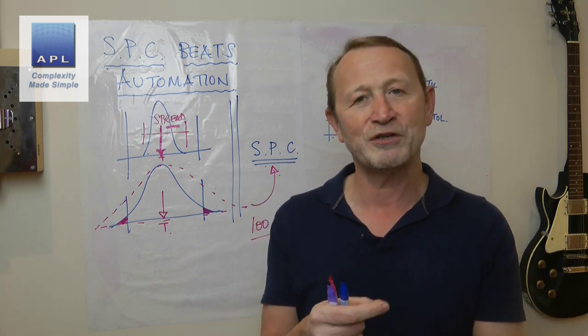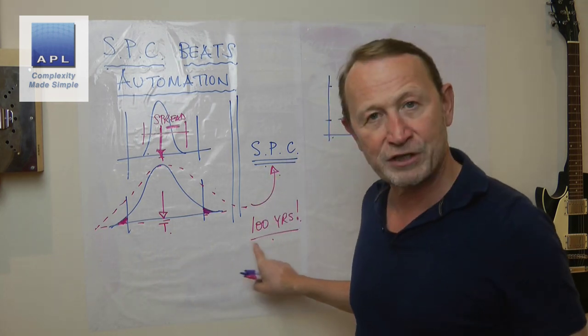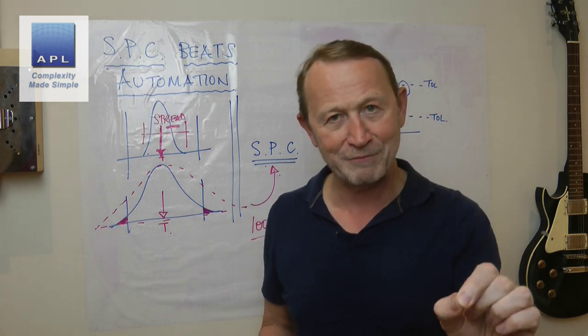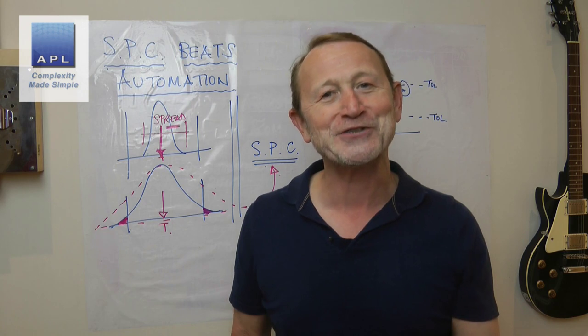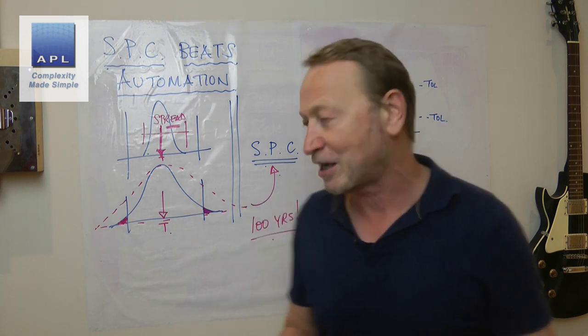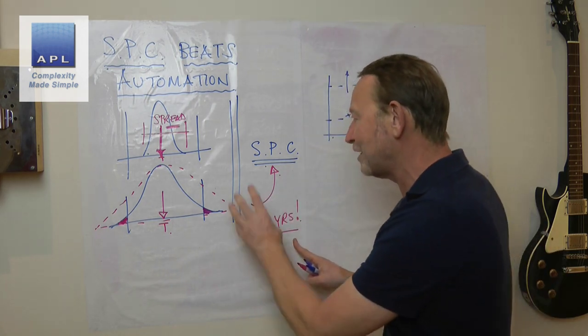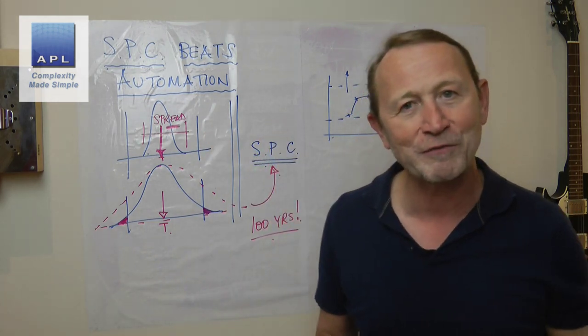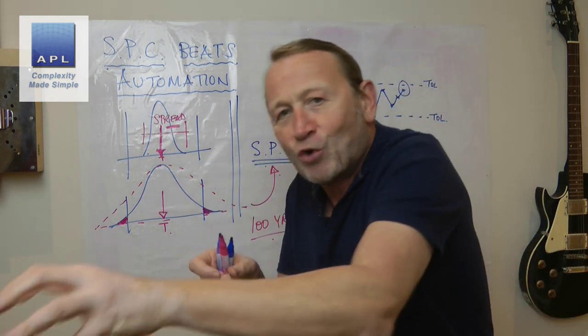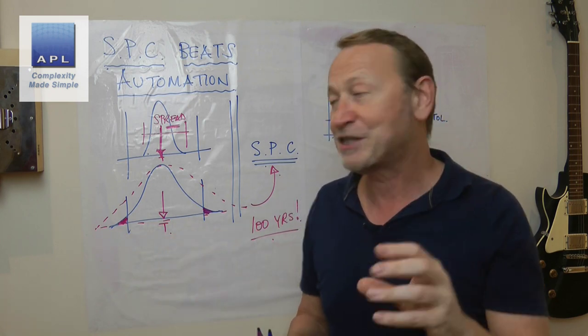But that's often because what we're doing is we're taking a hundred years of great mathematics and throwing it in the bin as if it doesn't exist, instead of saying, 'Let's take a hundred years of fabulous mathematics that helps us to get the most from our machine and let's automate that.'